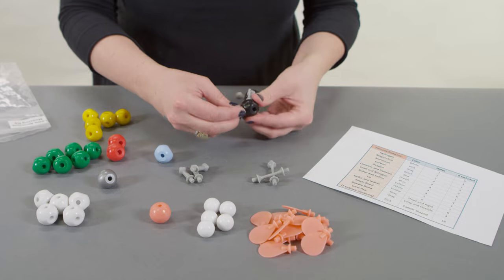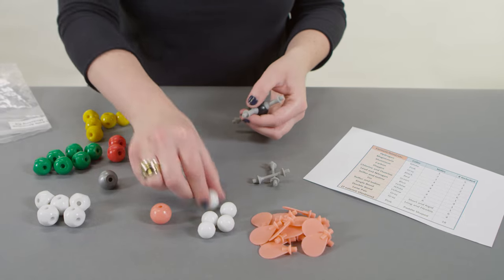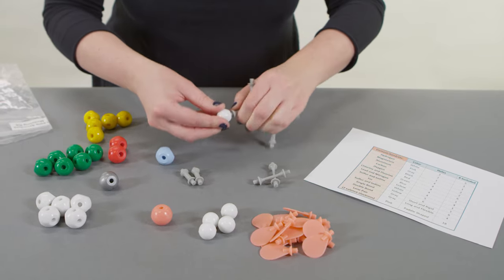Then create the four single bonds using the short rigid pieces to connect the hydrogen and carbon atoms together.